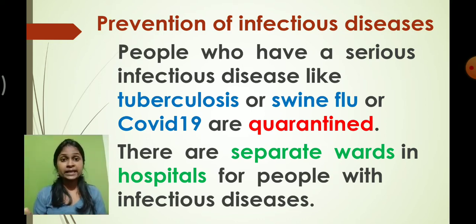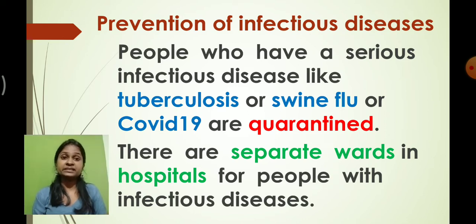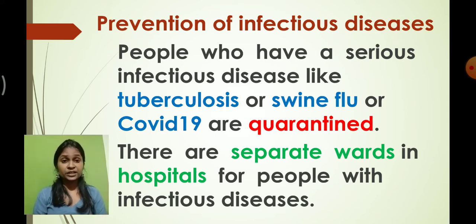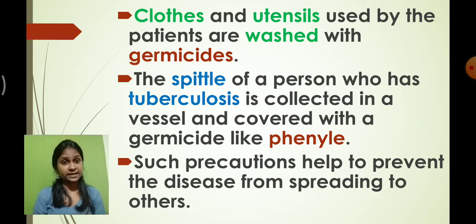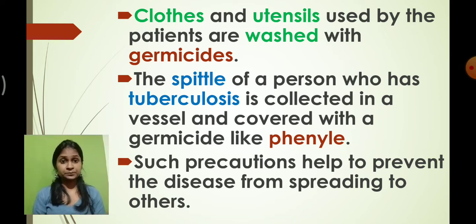If we do not take such precautions, one person could cause many people in the family to also suffer unnecessarily. If anybody is suffering from a highly infectious disease, they have to be kept separately. The clothes and utensils used by the patient must be washed properly with a germicide — for example, Dettol liquid, which is better to use at home.